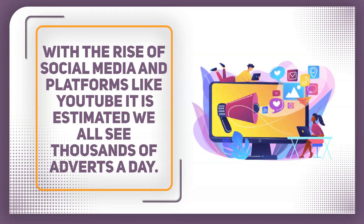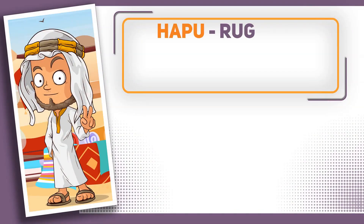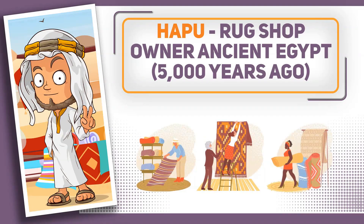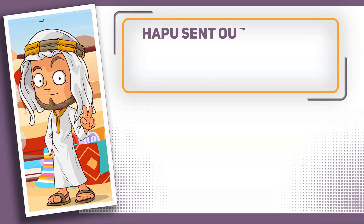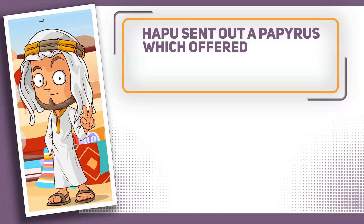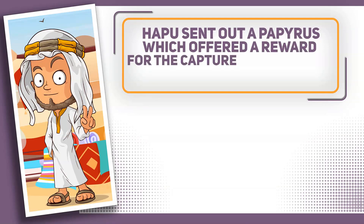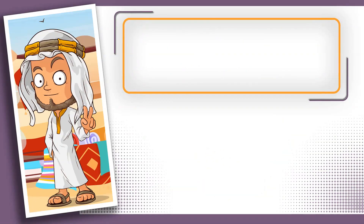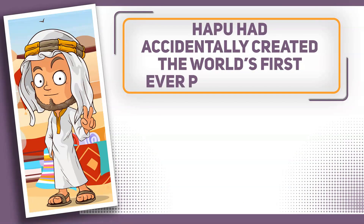We're going to travel back 5,000 years and meet Hapu, who was a rug shop owner in ancient Egypt. In around the year 3000 BC, Hapu sent out a papyrus — an ancient kind of document — which offered a reward for the capture and return of an escaped slave called Shem. If found, he would be returned to Hapu's shop where the reward could be claimed. As well as talking about the reward, Hapu described his shop so people could find it, calling it the best rug shop selling the best rugs in Egypt. Hapu had accidentally created the world's first ever printed advert.